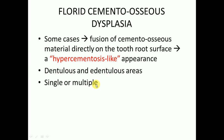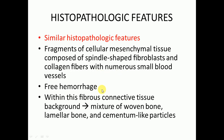All three patterns have similar histopathological features: fragments of cellular mesenchymal tissue composed of spindle-shaped fibroblasts and collagen fibers with numerous small blood vessels. Free hemorrhage may be present throughout the lesion — this is a characteristic feature of cemento-osseous dysplasia. In ossifying fibroma, free hemorrhages are present at the periphery, but in cemento-osseous dysplasia the free hemorrhage may be present throughout the lesion.